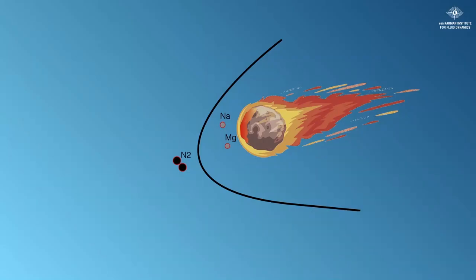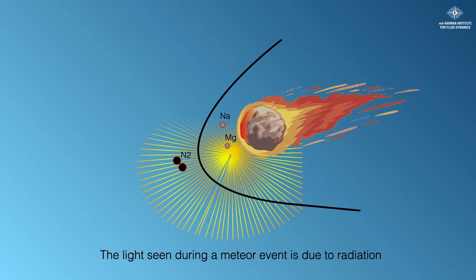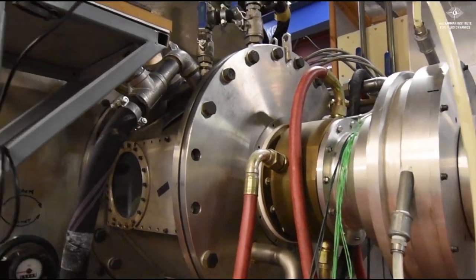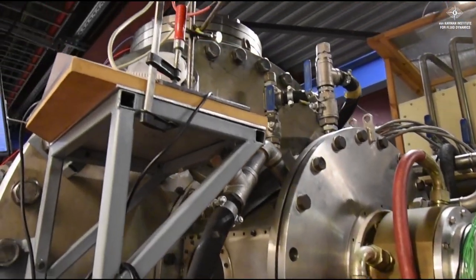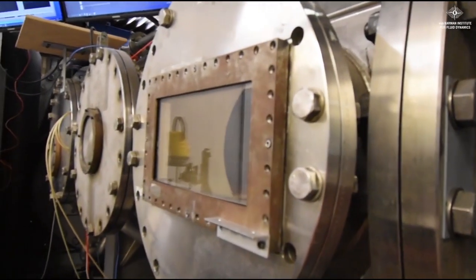One important characteristic of the meteorite phenomenon is the light emitted during the entry. This light is owed to the radiative processes inherent to hypersonic entry. The experimental observation of these radiative processes enables astronomers to classify the meteorite and to understand their origin. Our facility is utilized for the reproduction of the aerothermodynamic environment of atmospheric entry plasma flows.